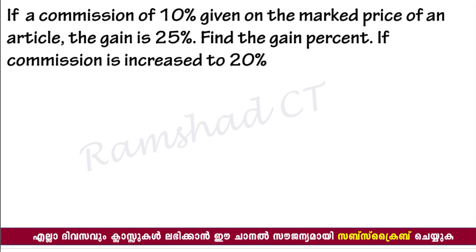If a commission of 10% is given on the market price of an article, the gain is 25%. Find the gain percentage if commission is increased to 20%.